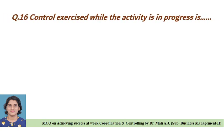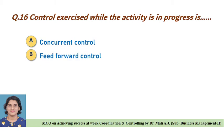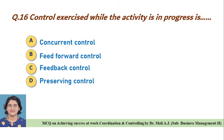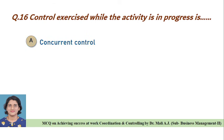Question sixteen: Control exercise while the activity is in progress is — Option A: concurrent control, Option B: feed forward control, Option C: feedback control, Option D: perceiving control. Correct answer is Option A, control exercised while the activity is in progress is concurrent control.